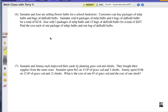Simile and Jose are selling flower bulbs for a school fundraiser. Customers can buy packages of tulip bulbs and bags of daffodil bulbs. Simile sold eight packages of tulip bulbs and six bags of daffodil bulbs for a total of $218. Jose sold three packages of tulip bulbs and 12 of the daffodil bulbs for the total of $267. Based on that information, let's find the cost of each one package of tulip bulbs and one bag of daffodil bulbs.